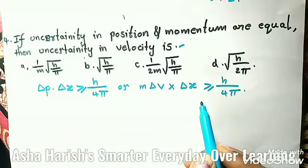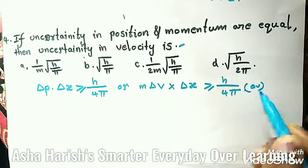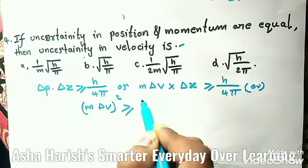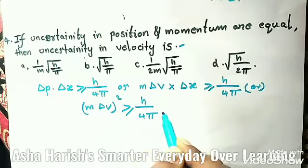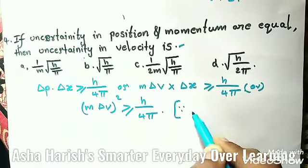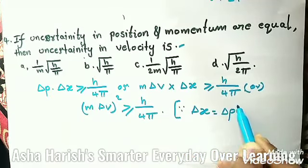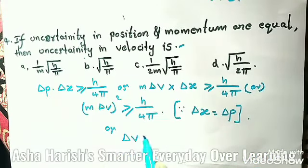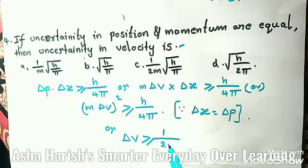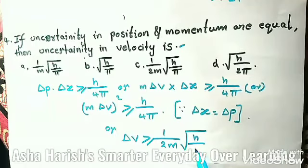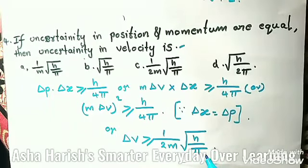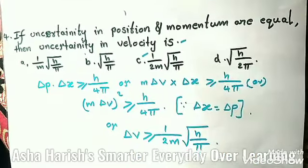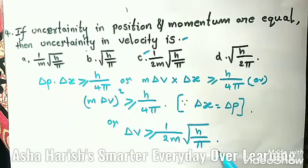Since Δx = Δp, substituting gives m·Δv ≥ h/4π. Therefore Δv ≥ (1/2m)√(h/π). This matches option C, derived from Heisenberg's uncertainty principle.